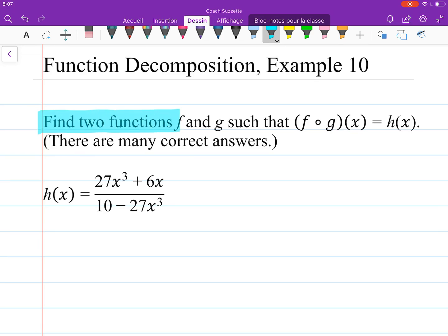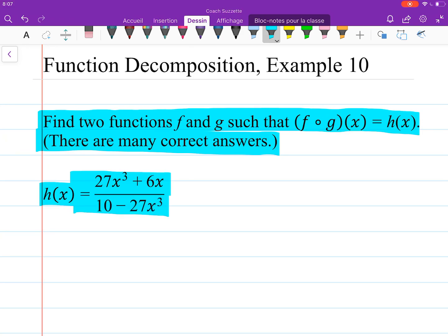We are given: find two functions f and g such that f of g of x is equal to h of x. There are many correct answers. h of x is equal to 27x cubed plus 6x divided by 10 minus 27x cubed.